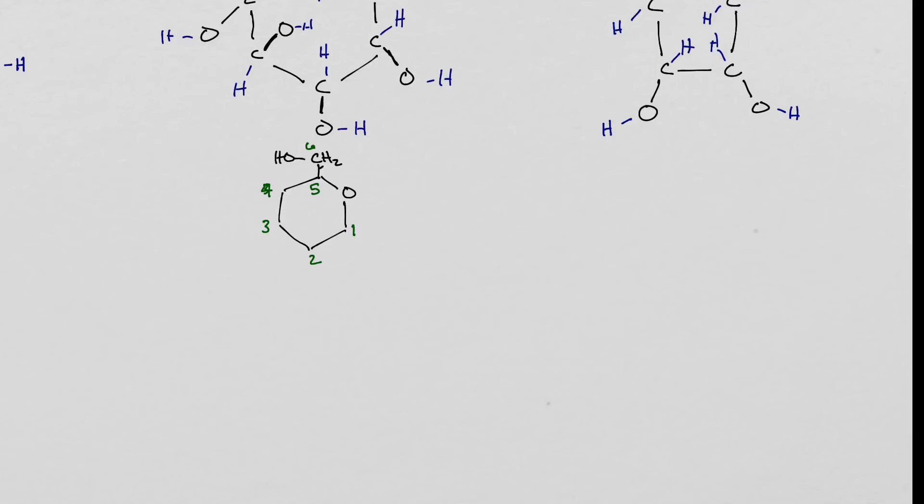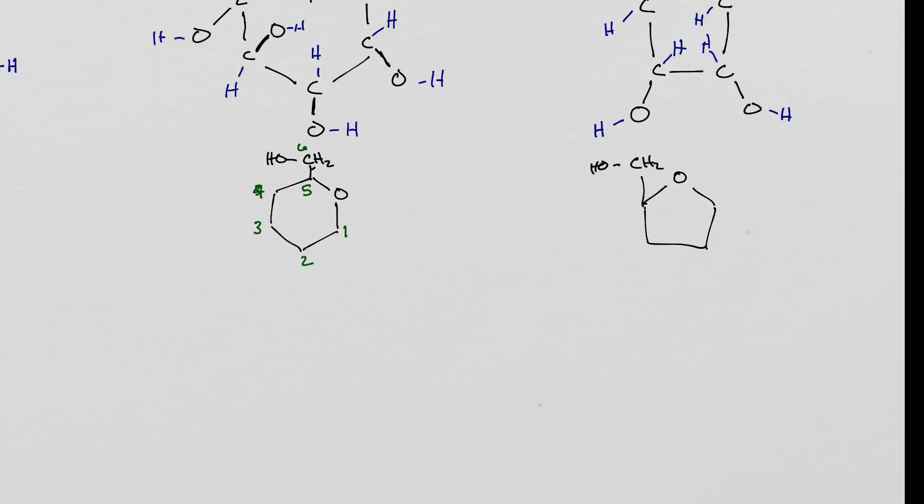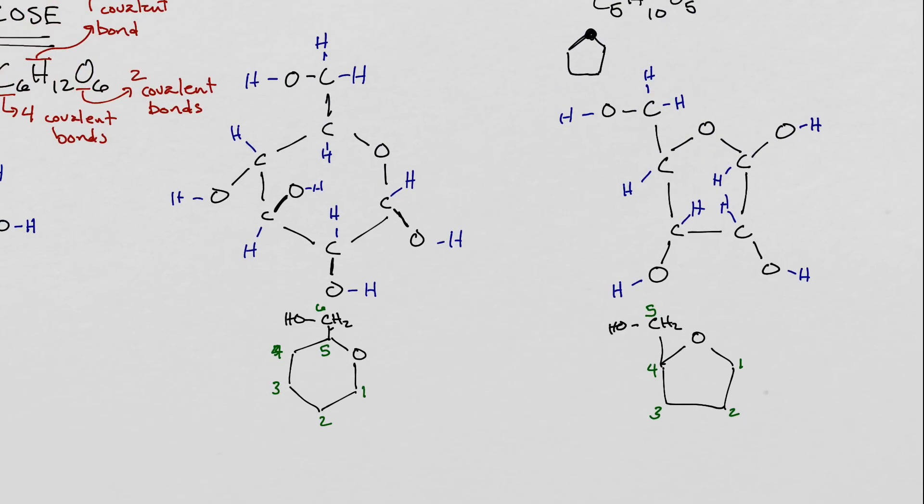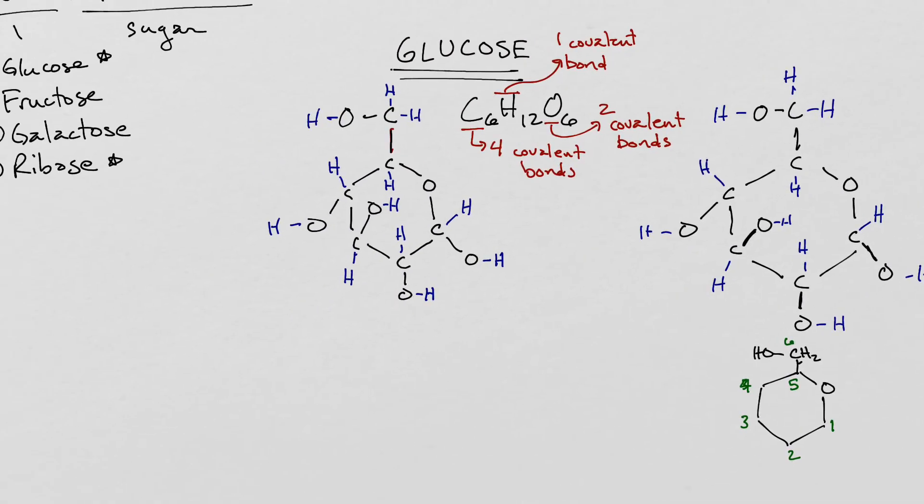And we draw our ribose. We have our oxygen here. We have another carbon coming up here, it's got two H's on it. We do the same thing here. We start with this oxygen here, and we go clockwise around. This is carbon one, carbon two, carbon three, carbon four, and carbon five. Those are our two monosaccharides that we need to know.